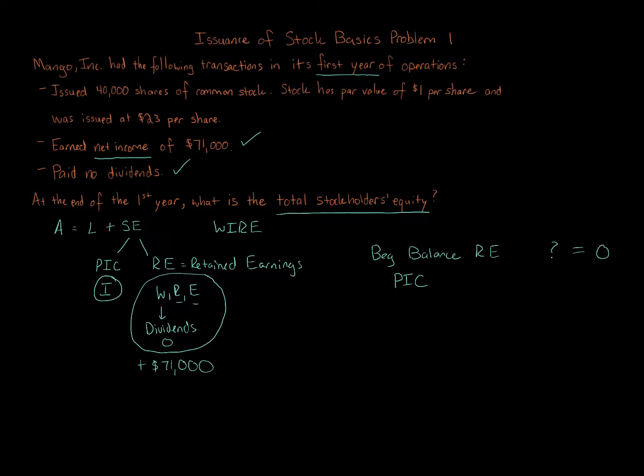The paid-in capital, which is the I for investments, shows that Mango Inc. issued 40,000 shares of common stock during this first year. The stock has a par value of $1 and was issued at $23. We'll break out the par value of the common stock separately.